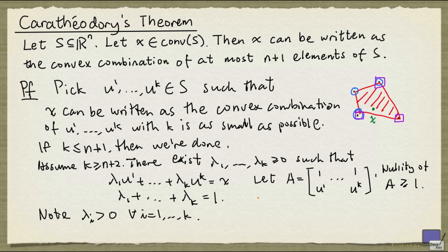What that means is, we can find a d in R^k, where d is not identically 0, such that d is in the null space of A. In other words, Ad is equal to 0.